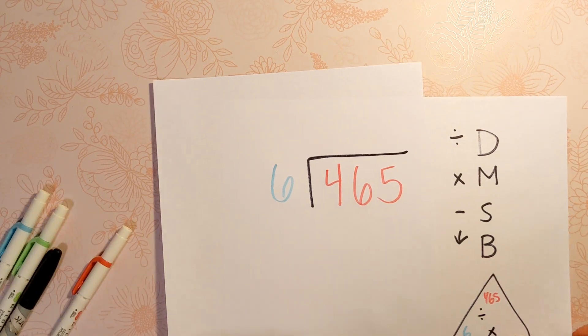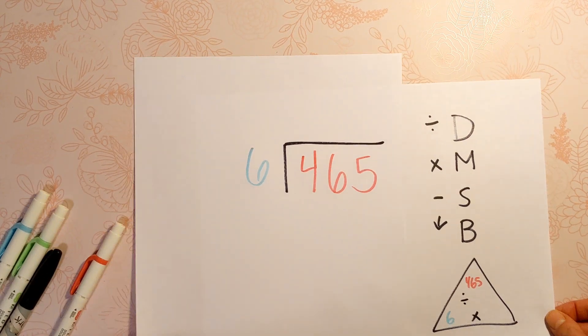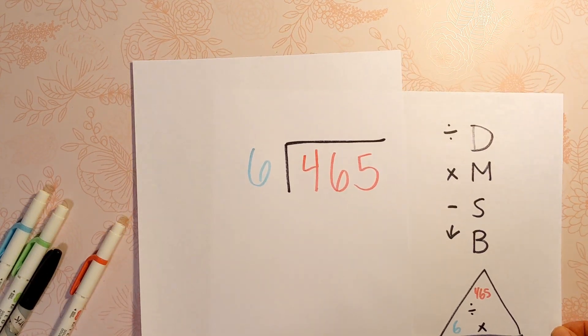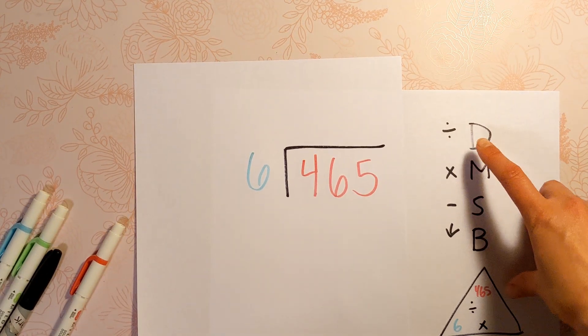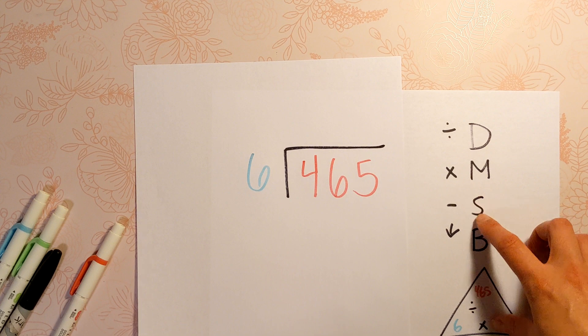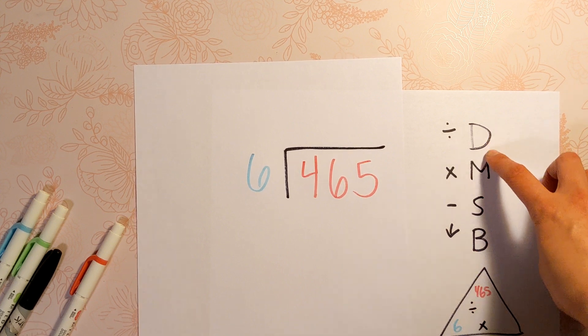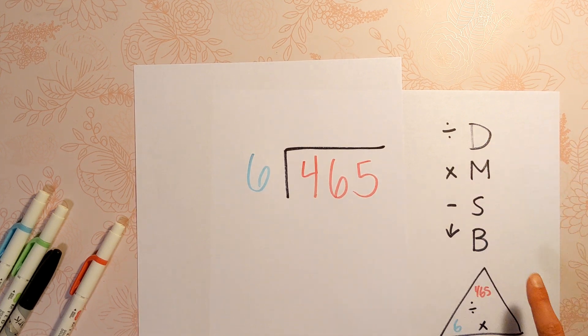Today we are doing 465 divided by 6 using the standard algorithm. The steps are: divide, multiply, subtract, bring down. Does McDonald's sell burgers? — that's the mnemonic to remember the order.